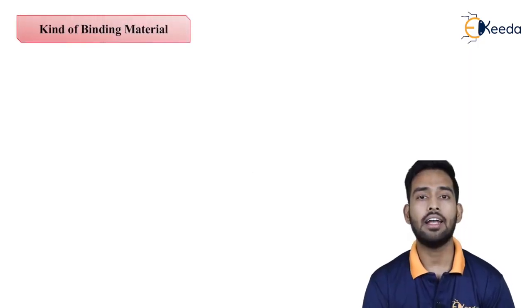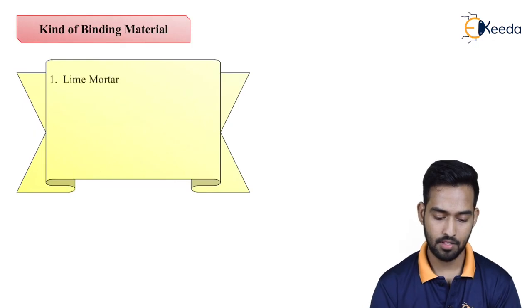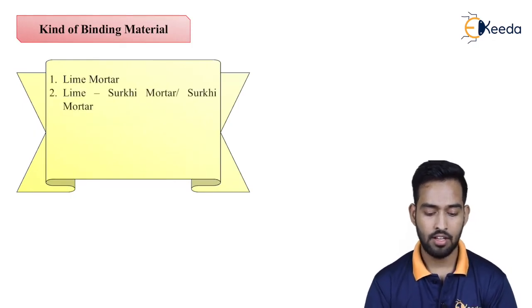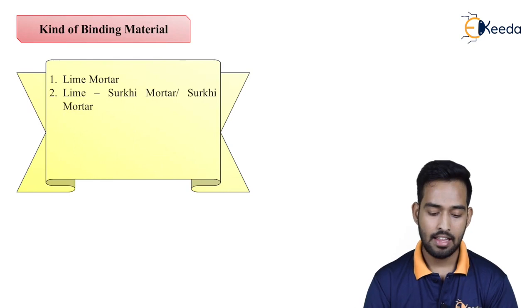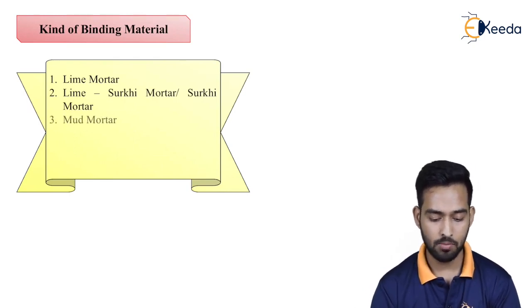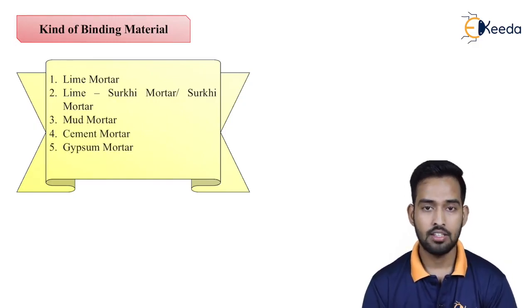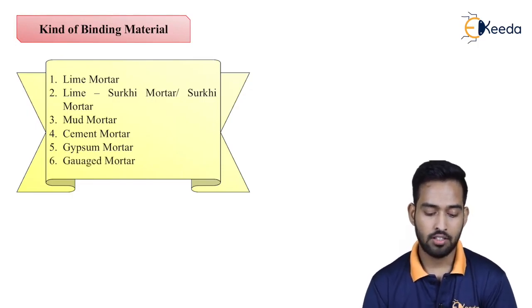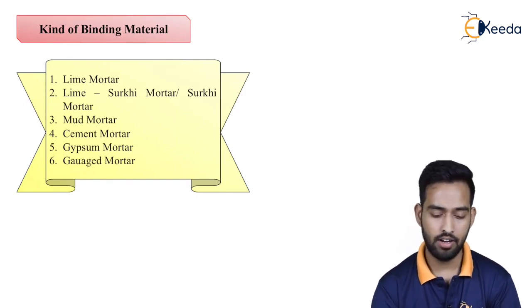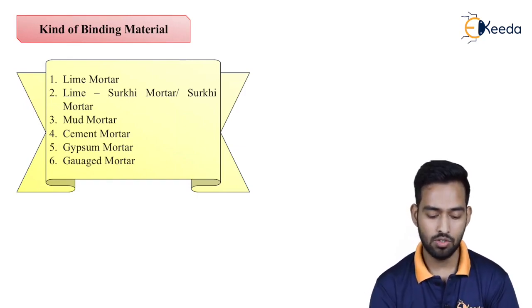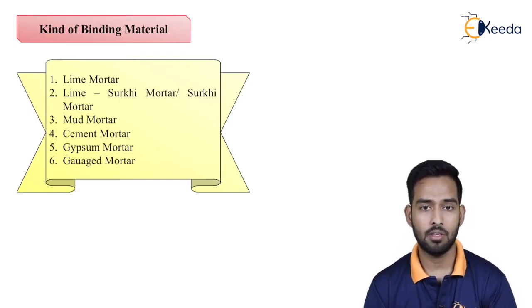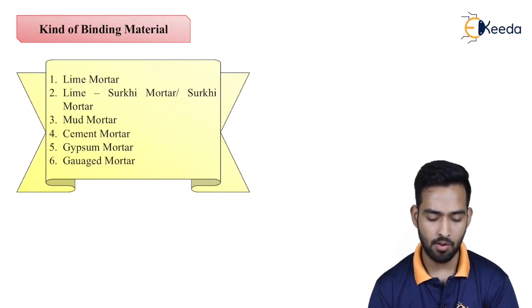Next is the kind of binding material we are using. Based on it, we have lime mortar, lime surki mortar, mud mortar, cement mortar, gypsum mortar, or gauge mortar. So depending upon the material used, we can divide the mortars into six categories. The different types of binding materials we can use are lime, cement, and surki — generally we use lime or cement.